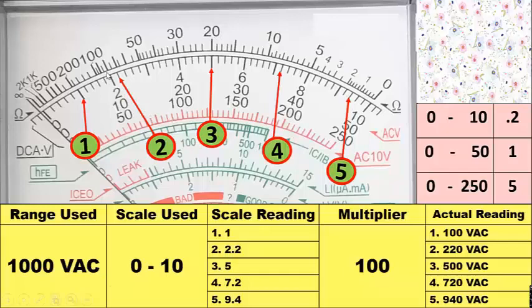For number 1, the reading is 1. For number 2, it is 2.2. For number 3: 4, 4.2, 4.4, 4.6, 4.8, then 5 — number 3 is 5. For number 4: 6, 6.2, 6.4, 6.6, 6.8, 7, 7.2 — number 4 is 7.2. For number 5: 8, 8.2, 8.4, 8.6, 8.8, 9, 9.2, 9.4 — number 5 is 9.4.